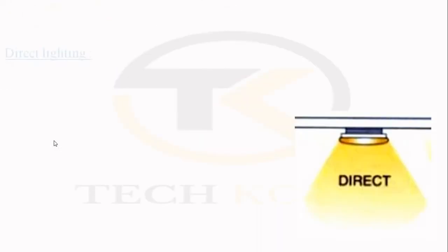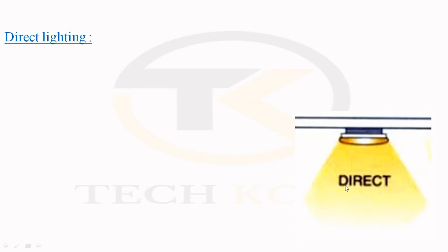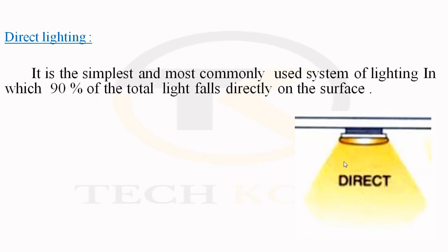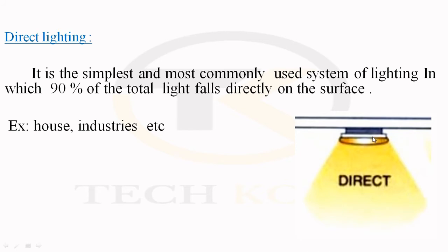In direct lighting, 90% of the total light falls directly on the surface, as you can see here. It is commonly used in houses, industries, and shops. A reflector is fixed on top of the bulb so that the maximum lighting falls on the object.